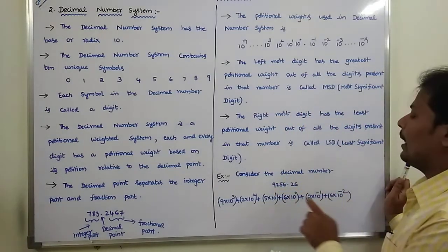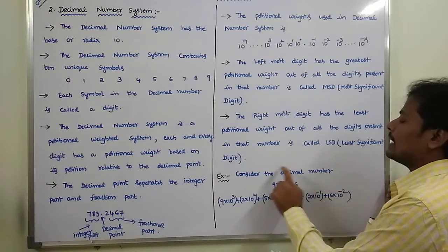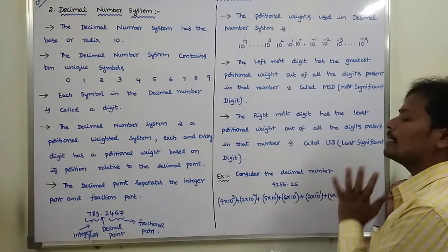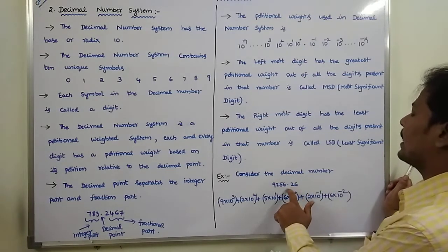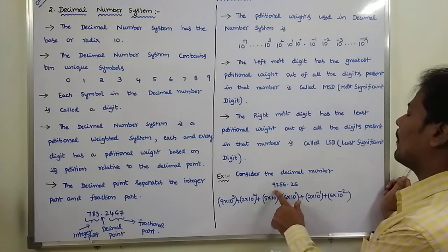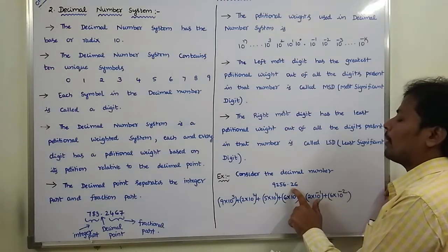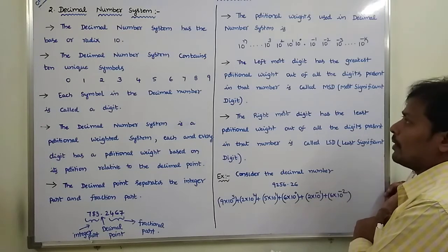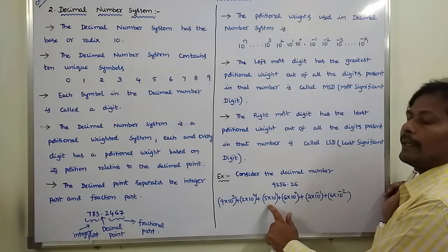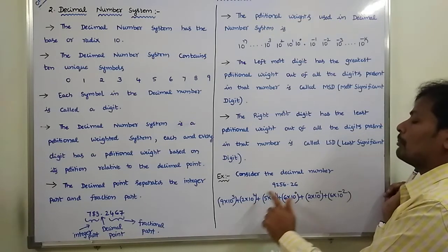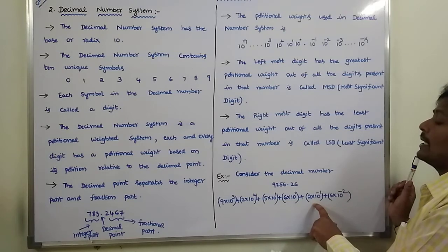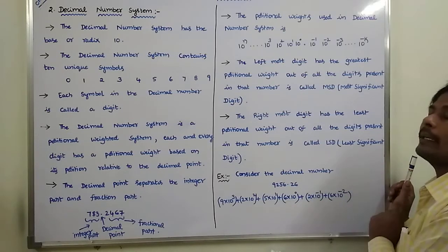Now consider the example 9256.26. This decimal number has the independent symbols 9, 2, 5, 6. Before the decimal point, the positional weights are 10 power 0, 10 power 1, 10 power 2, 10 power 3. After the decimal point, the positional weights are 10 power minus 1 and 10 power minus 2. So: 6 is multiplied with 10 power 0, 5 with 10 power 1, 2 with 10 power 2, 9 with 10 power 3, 2 with 10 power minus 1, and 6 with 10 power minus 2.